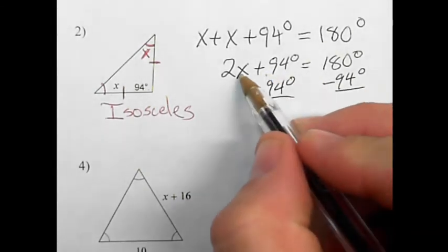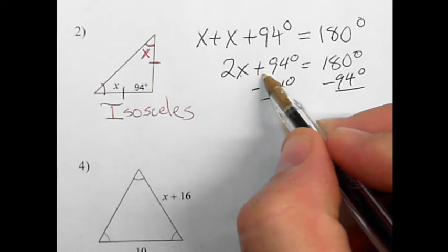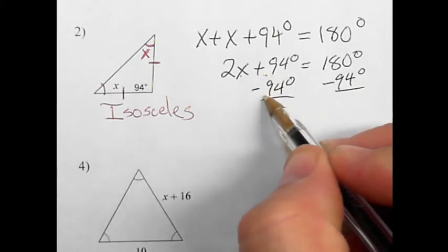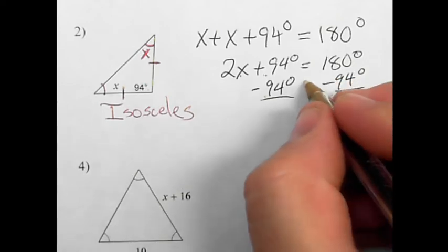Why? Because I'm adding 94 to 2x. To move the 94 away, I do the opposite of add, which is subtract. And whatever I do on one side of the equation, I have to do on the other side.